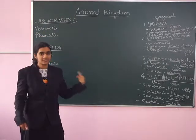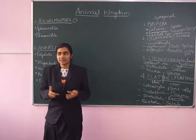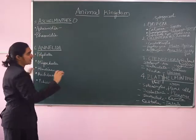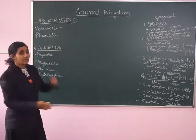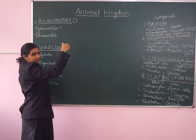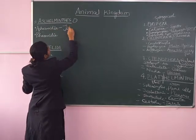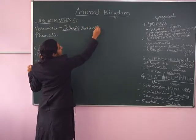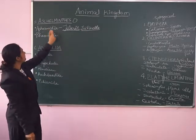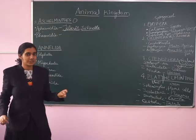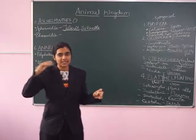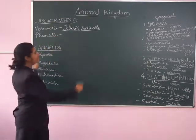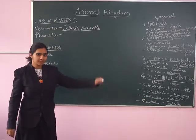The classification of Aschelminthes is into Aphasmidia and Phasmidia. Phasmidia members have glandulo-secretory phasmids in them, while Aphasmidia members have no phasmids and are not as harmfully parasitic. Examples of Aphasmidia include Triuris and Trichinella. The Phasmidia class is an exclusively parasitic member-containing class, with many parasitic worms commonly found in humans, and these members contain glandular secretory phasmids.